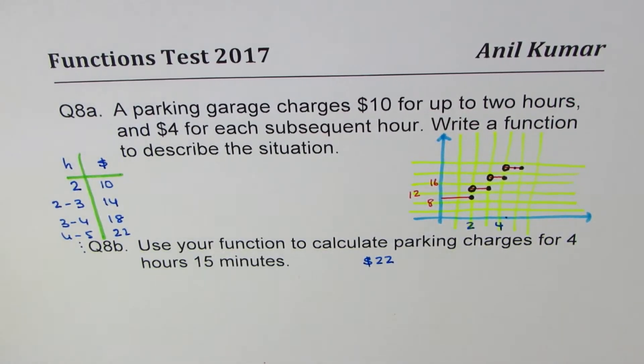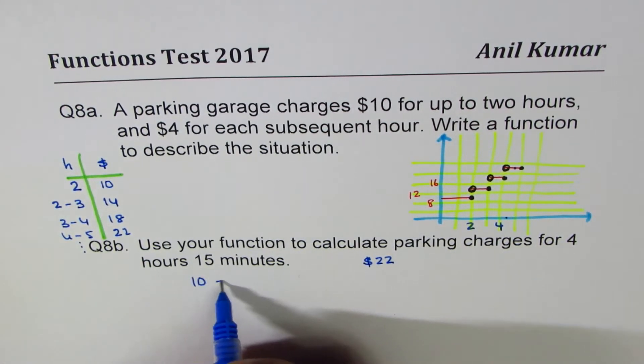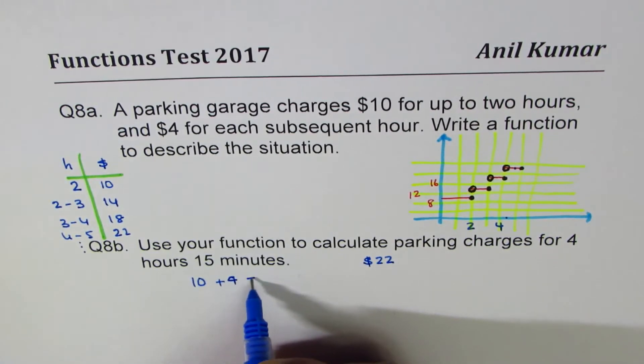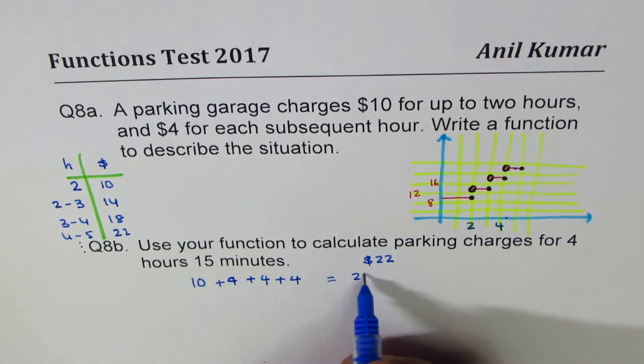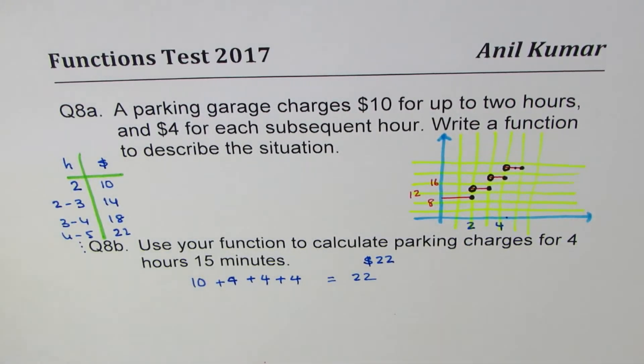So even if it is a minute more than four hours, you pay for first two hours, which is $10, third hour, which is $4, fourth hour, which is again $4, and beginning of the fifth, whether it is completed or not, you pay for it. So it's step function, you get $22. That is how you need to do your calculation.